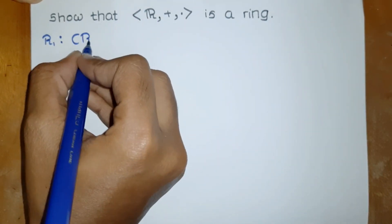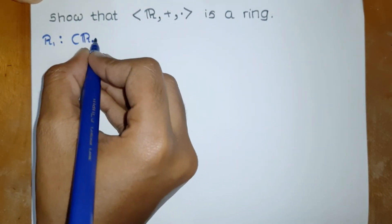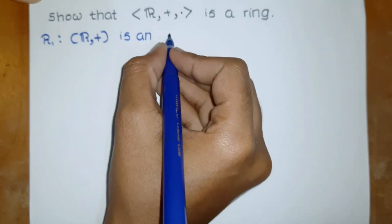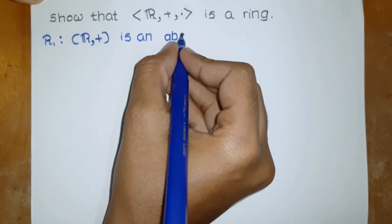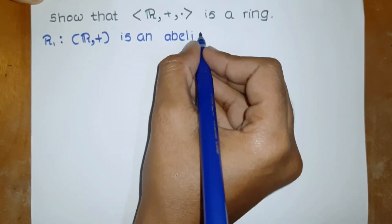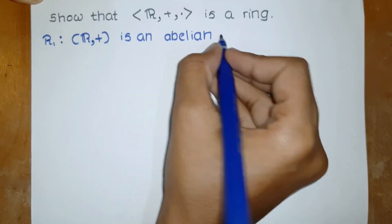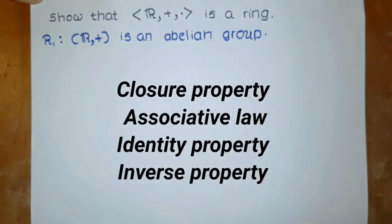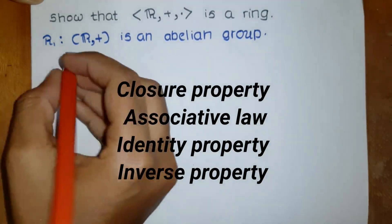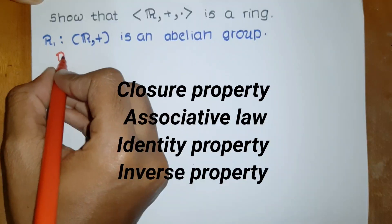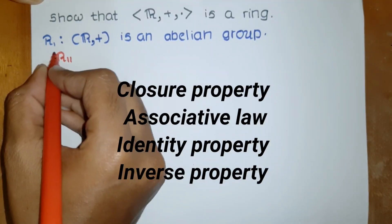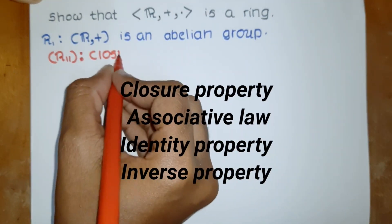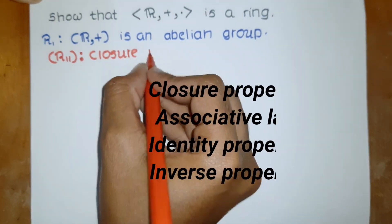In this example, we have to show that the real numbers form a ring under ordinary addition and ordinary multiplication. In the first part, we have to show that R is an abelian group. For that, we have to consider five axioms, which we learned in group theory. The first one is the closure property.